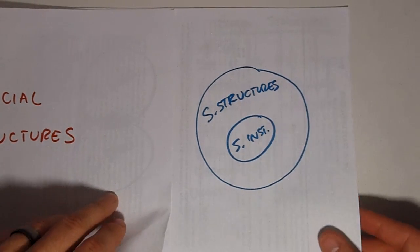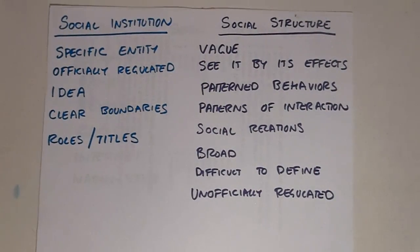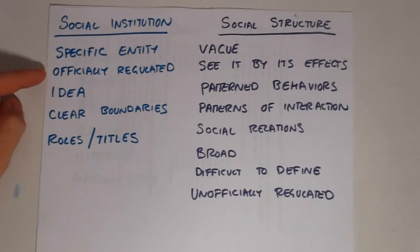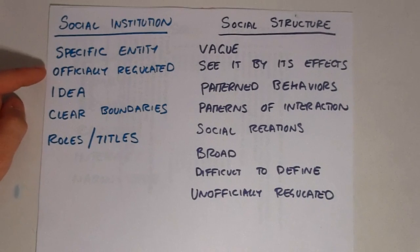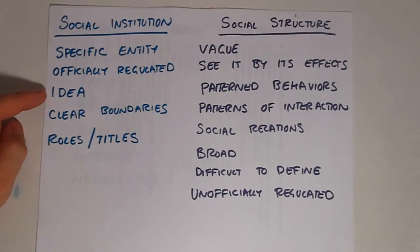To go through their characteristics in more detail would yield a chart or list something like this. A social institution is a specific entity, such as a university, a church, or a business. It is officially regulated, meaning that within that entity there are specialized people or rule books designed to regulate and manage the behavior of the people within the institution. Social institutions are built around an idea, and this idea is expressed openly in mission statements or other similar kinds of documents.